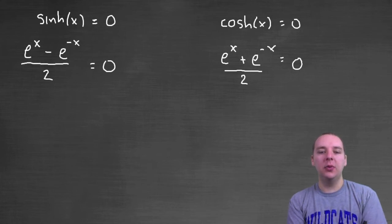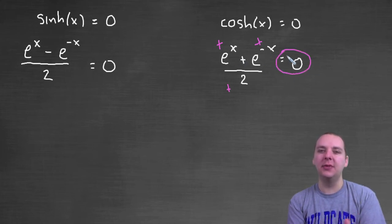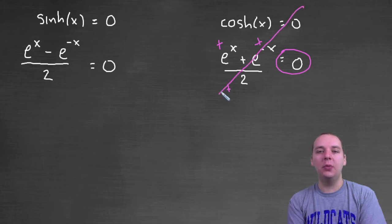Looking at it this way, e to the x is always positive, e to the negative x is always positive, so you have a positive plus a positive divided by a positive. There's no way this could ever equal zero. Either graphically or algebraically, this guy will not yield any answers.